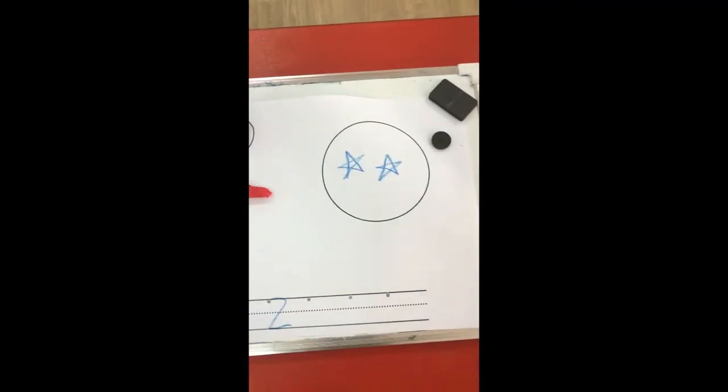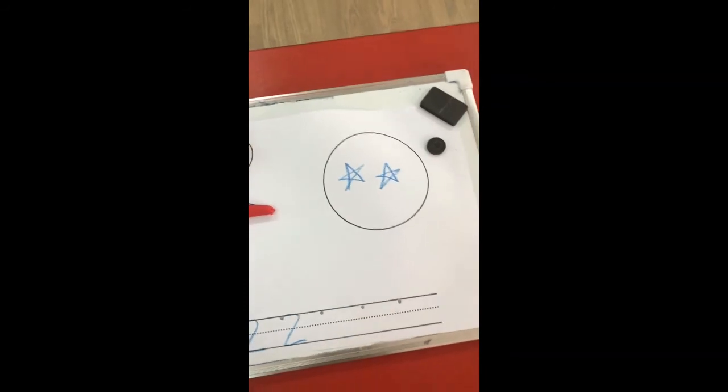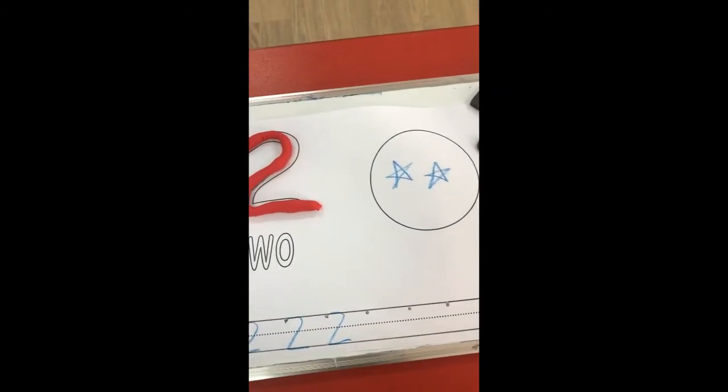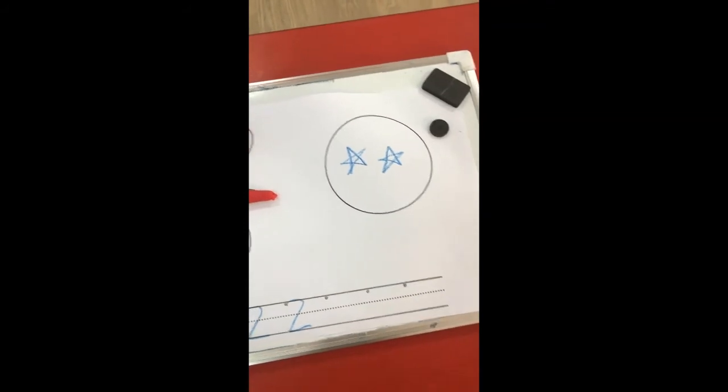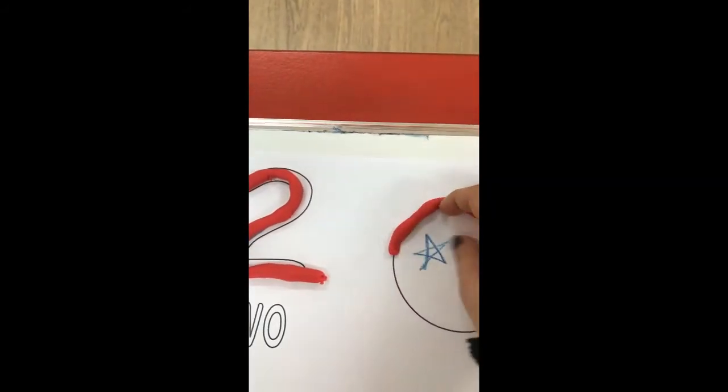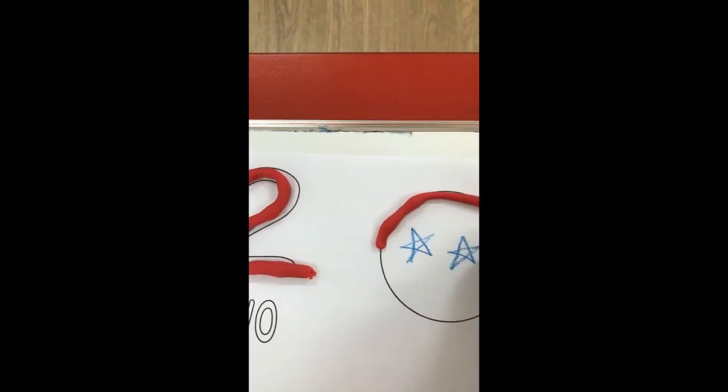Round. Okay. What shape is this? Yes! Circle. Now I want you to trace the circle with your Play-Doh.